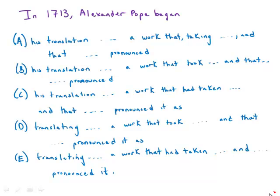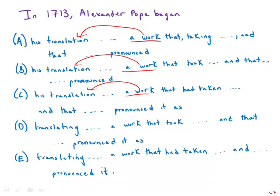This question concerns Alexander Pope's monumental translation of the Iliad. First, let's look at the split at the very beginning: 'translation' versus 'translating.' If we say 'his translation of the Iliad, a work that,' then 'a work that' would refer to the translation. But when we say 'translating the Iliad, a work that,' then 'a work that' seems to refer to the Iliad itself, not to the translation. So that's a problem with those two options.